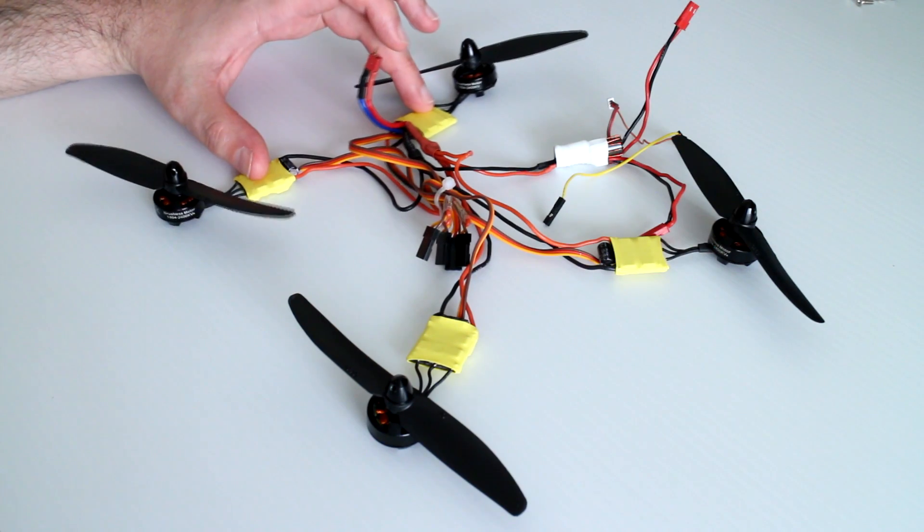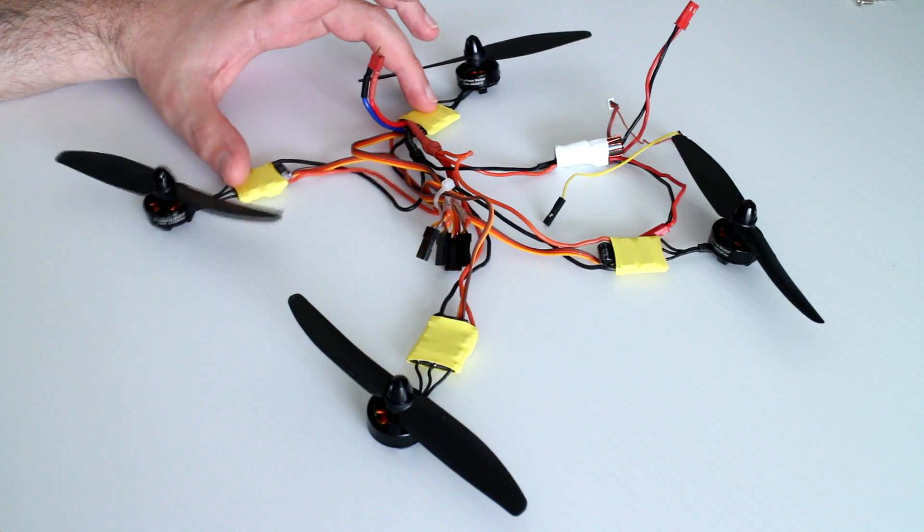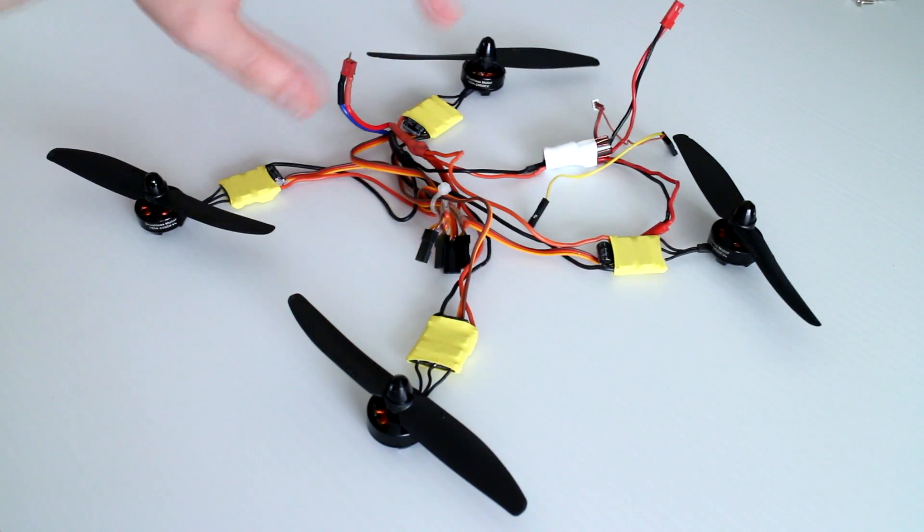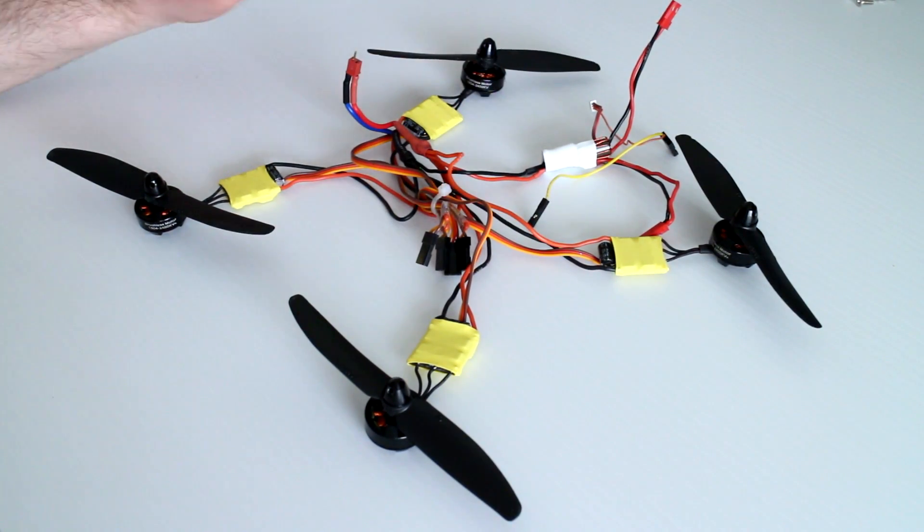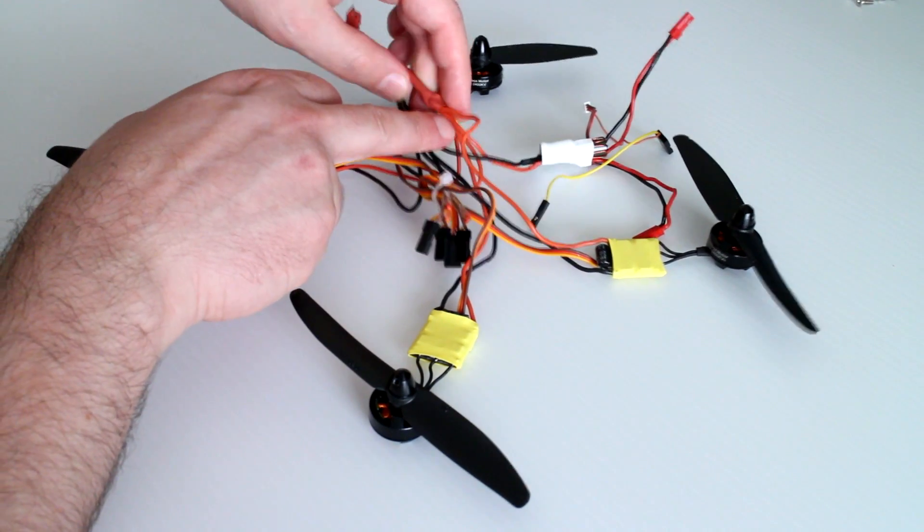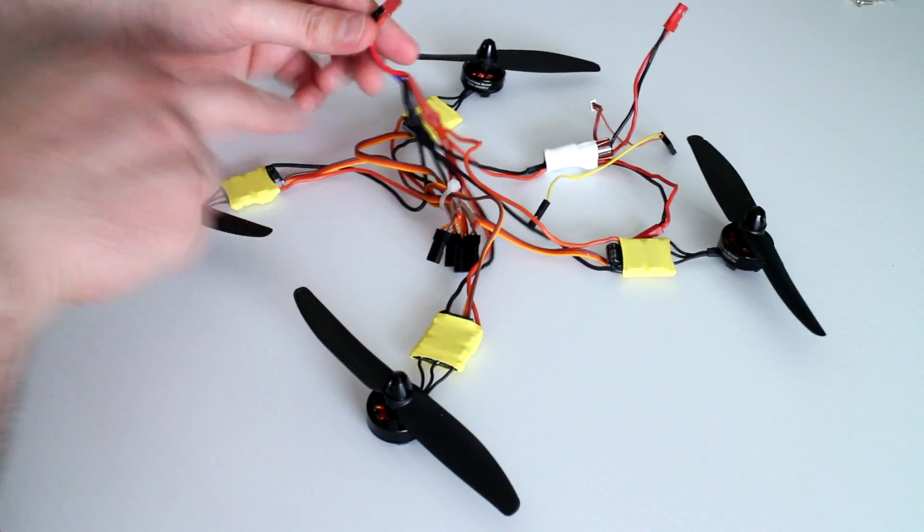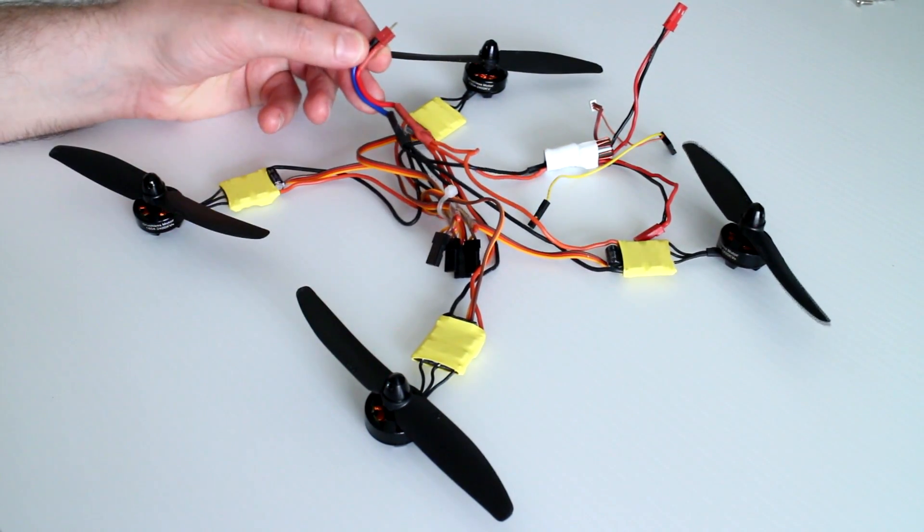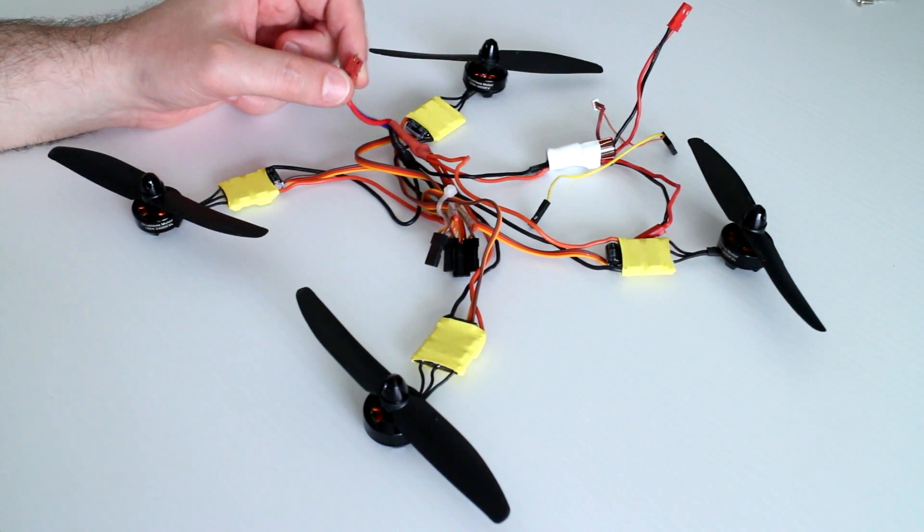The ESCs I'm using are 10 amp three cell capable ESCs loaded with Simon K firmware. I don't have a power distribution module to solder all the power wires to, I'm taking the light route here. I've simply soldered all the positive wires together, wrapped in heat shrink, same with all the negatives, and I've simply had that connecting to a micro Deans plug. Once again micro Deans to save on weight.